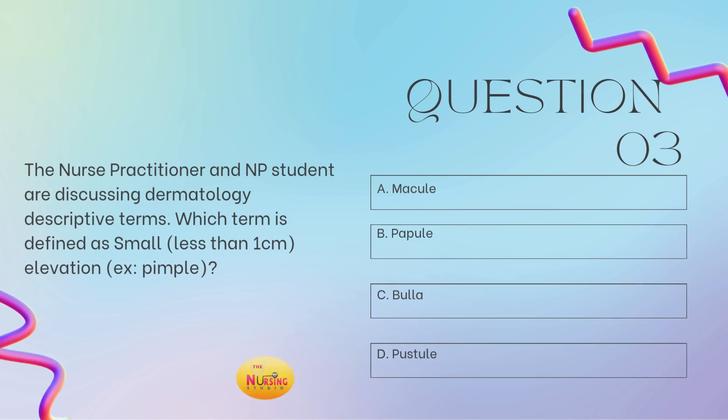Question number three: the nurse practitioner and NP student are discussing dermatology descriptive terms. Which term is defined as a small, less than one centimeter elevation? An example is a pimple. Is it A, a macule? B, a papule? C, a bulla? Or D, a pustule? Tell me what you got. The stem asks: which term is defined as small, less than one centimeter elevation, like a pimple? And this is B, a papule.